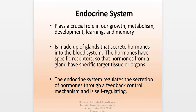Moving on to the endocrine system, which plays a role in our growth, body metabolism, development, learning, and memory. The endocrine system is made up of glands that secrete hormones into the blood system. Like neurotransmitters, hormones have specific receptors, so when a hormone is secreted from a gland, there is a specific target tissue or organ it travels to. One difference is that neurotransmitters have a very short distance to travel, whereas hormones travel a much longer distance. The endocrine system regulates hormone secretion through a feedback control mechanism and, in a healthy functioning body, is self-regulating.